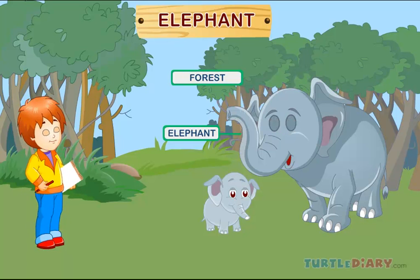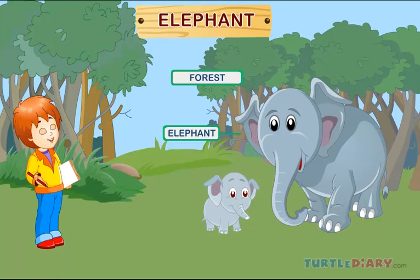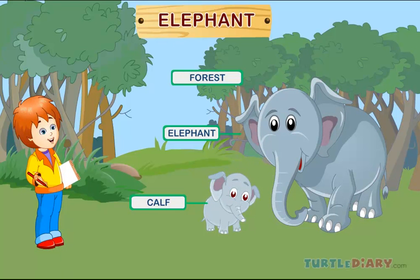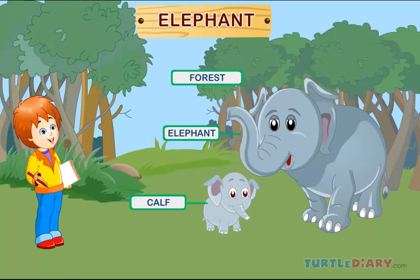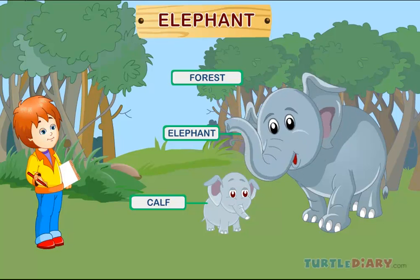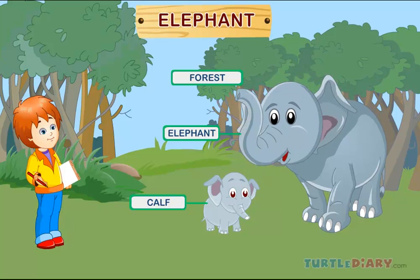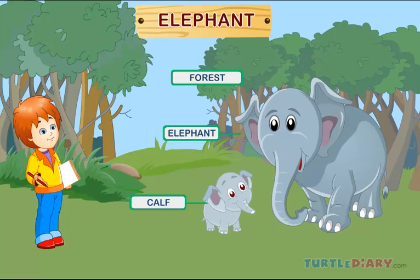Elephant. Here is an elephant. A baby elephant is called a calf. They are found in swamps and forests.